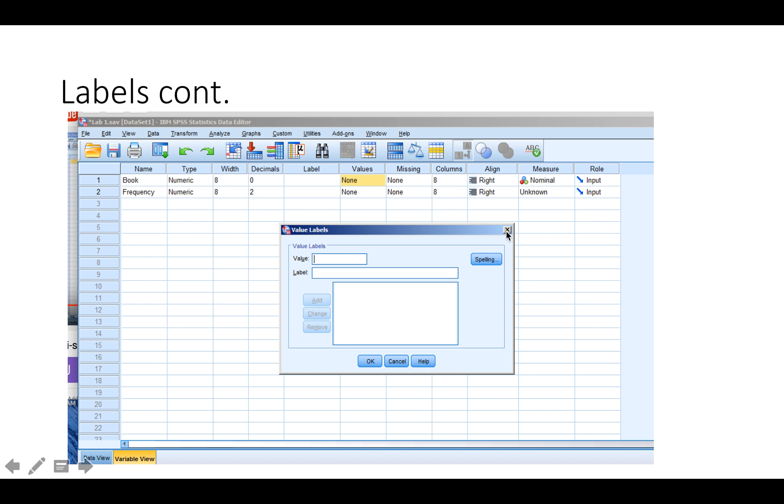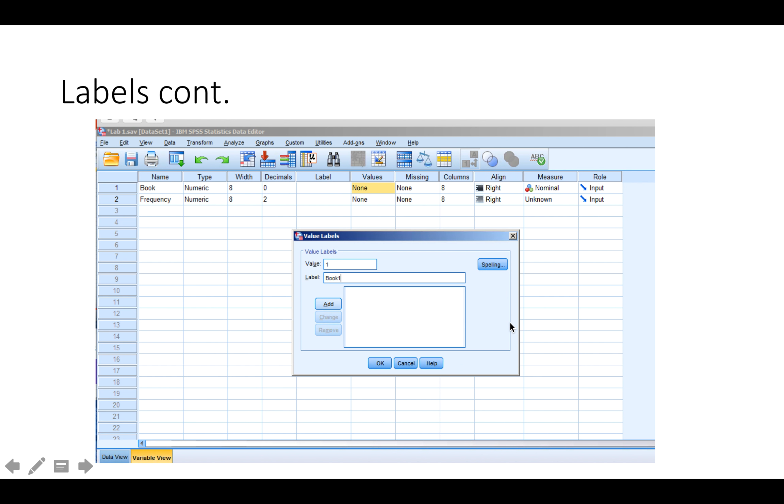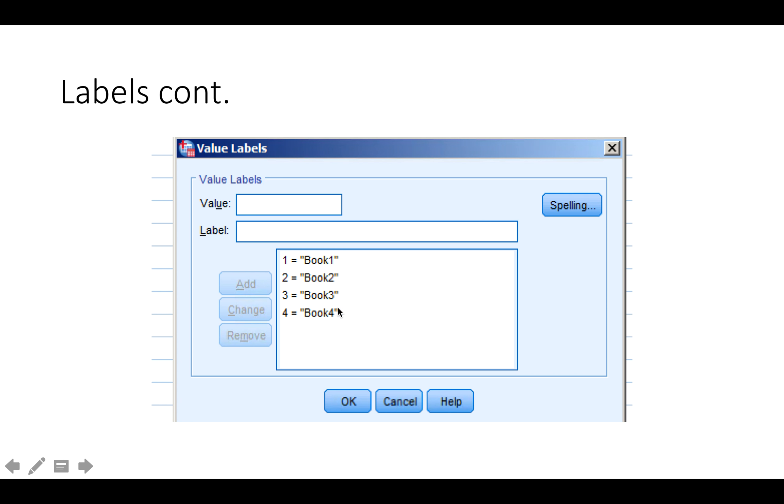In the book variable we want to change the values that are listed where it says none under the value column. So when we double click on it a box like this will appear. We are going to put a value of 1 for book 1 and click add, 2 for book 2, 3 for book 3, and 4 for book 4 and keep adding them until you have all of them. Then you're going to click OK.